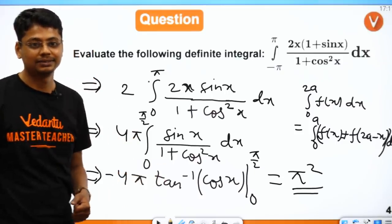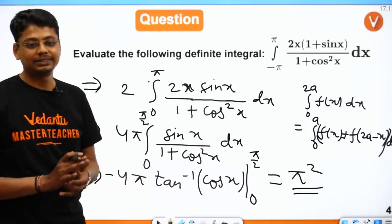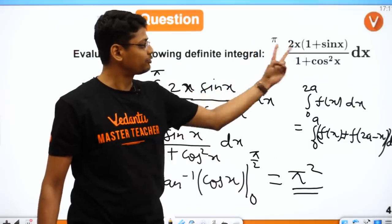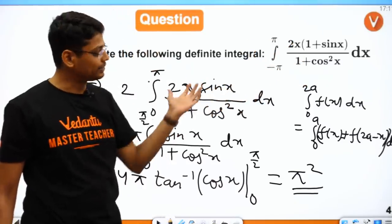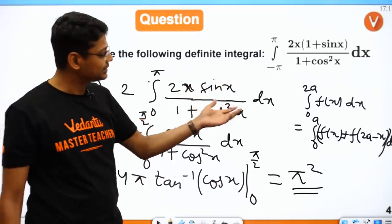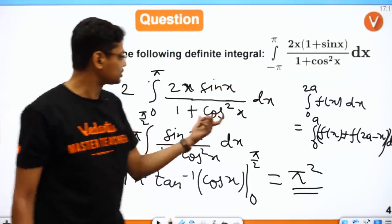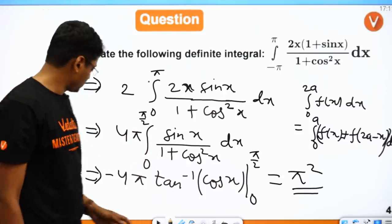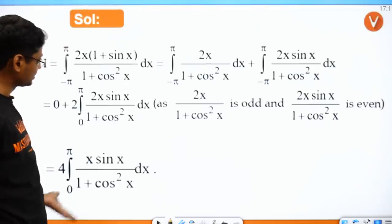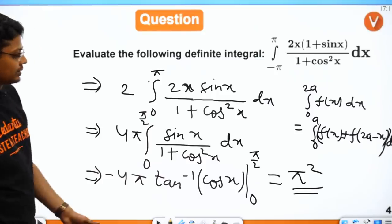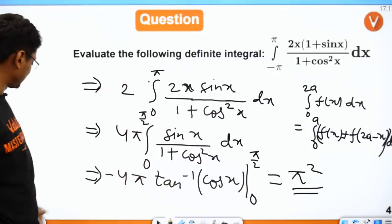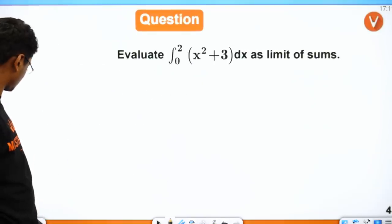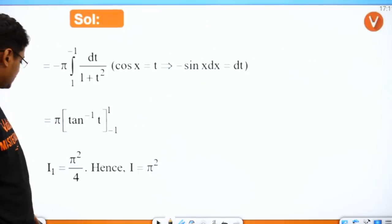Praveen Goel got it right. Abhijit is saying the first part (2x/(1+cos²x)) is 0, which is correct — only the first part is 0. The part 2x·sin x/(1+cos²x) is not 0, as we have seen. This is the typical way you should write in boards — this is also a 4-mark question. π² is the answer.